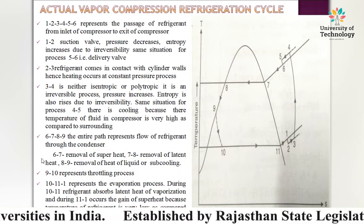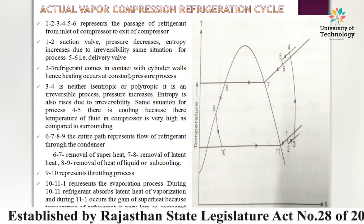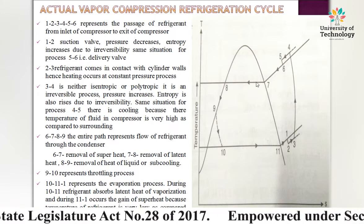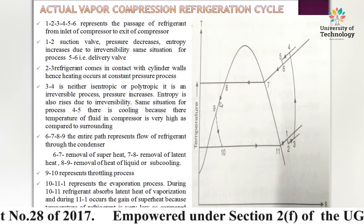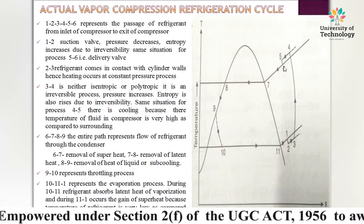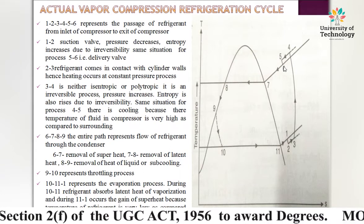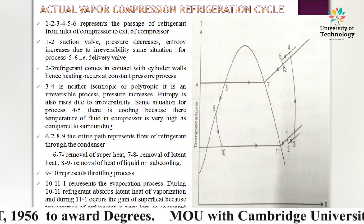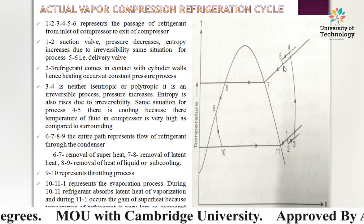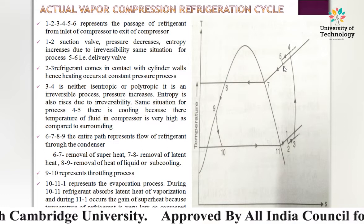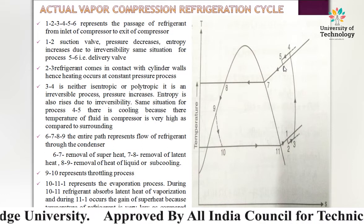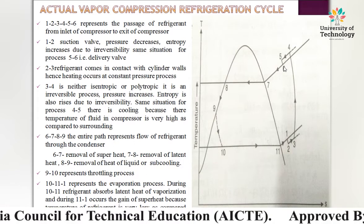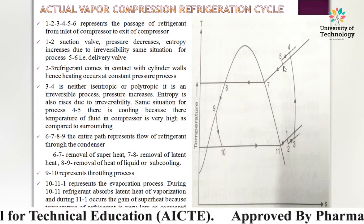Next, points 6-7-8-9 describe the condenser section. At point 6, there is superheated refrigerant. From 6→7, the superheat is removed due to the temperature difference between the system and surroundings — this is the desuperheating process.